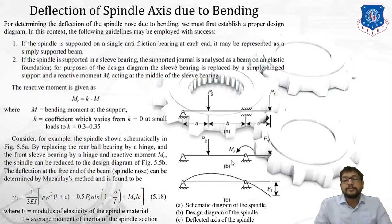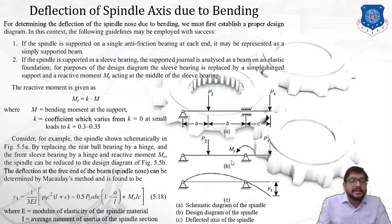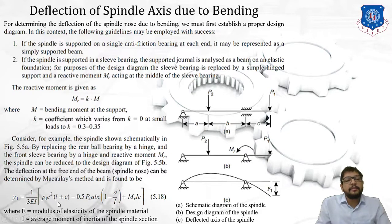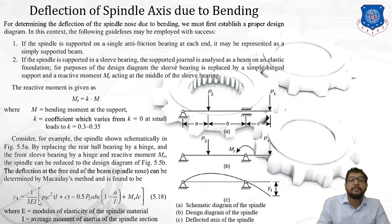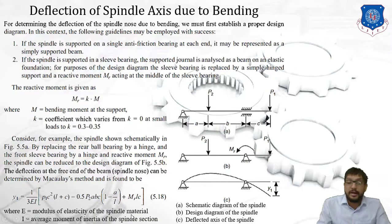The deflection at the free end of the beam — the spindle nose — can be determined by Macaulay's method and is found to be: y1 = (1/3EI) × [ b1·c² × (1 + c) − 0.5·b2·a·b·c × (1 − a/L) ] + MR·L·c. Let's call this equation 5.1. Here, E is Young's modulus of the spindle material and I is the average moment of inertia of the spindle cross-section.